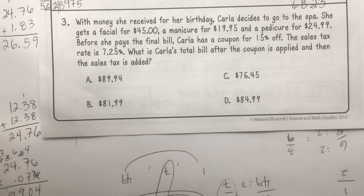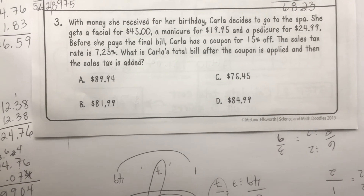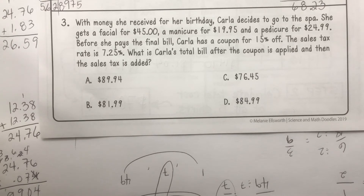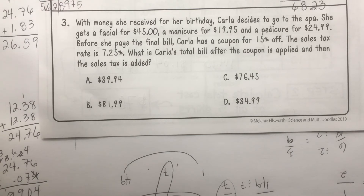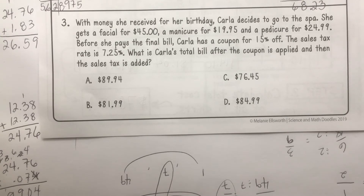One more problem on this trickier page. With the money she received for her birthday, Carla decides to go to the spa. She gets a facial for $45, a manicure for $19.95, a pedicure for $24.99. Before she pays the bill she has a 15% off coupon, and the sales tax is 7.25%.